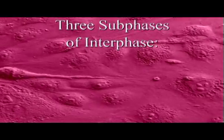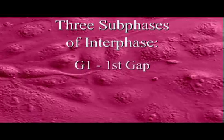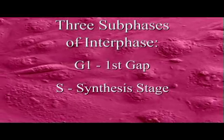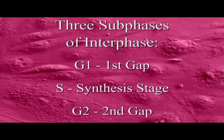However, a number of significant events occur during interphase that has caused biologists to divide interphase into three sub-phases: G1, which stands for first gap; S, which stands for synthesis stage; and G2, which stands for second gap.